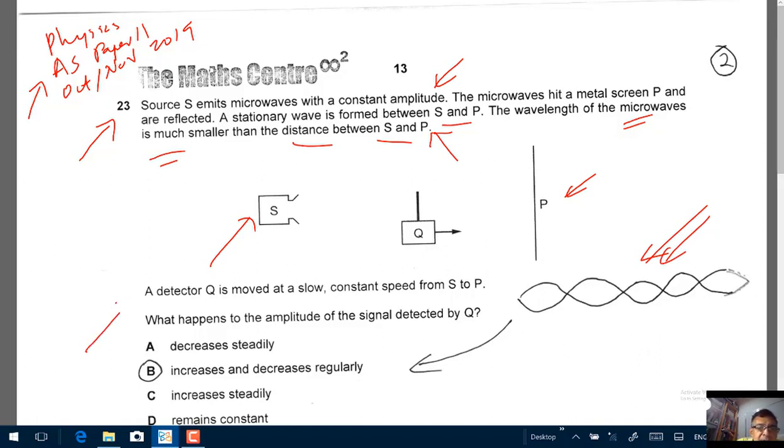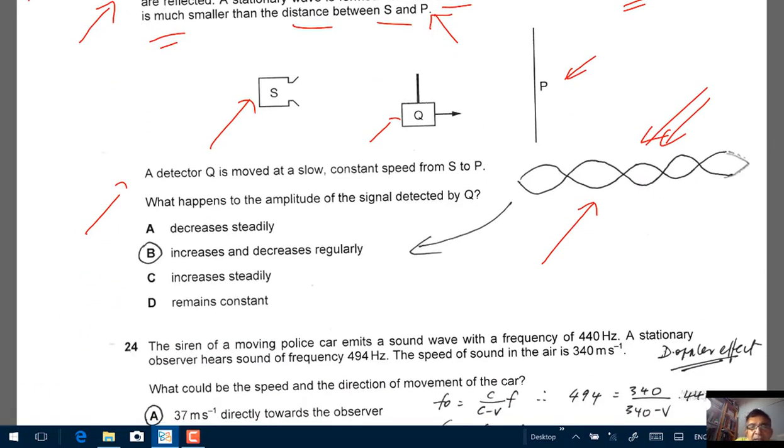Now let's read on. A detector Q is moved at a slow constant speed from S to P. What happens to the amplitude of the signal detected by Q? By looking at this picture, you know the answer straight away. Correct response is B. The amplitude will increase and decrease regularly, as you can tell from this picture here. Again, correct response is B.